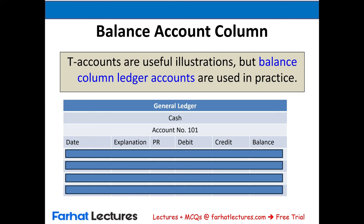Now we're going to move from the general journal — from journalizing — to examining the general ledger. The ledger keeps track of each account separately. The general ledger has a date column, an explanation column, a PR column, a debit column, a credit column, and a balance. Those are the basic columns. The general ledger will keep track of each account or each transaction separately.